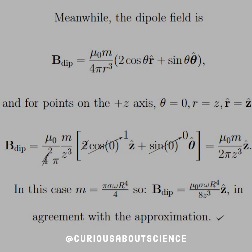All right. But we know that the magnetic field of the dipole is mu naught m over 4 pi r cubed, 2 cosine theta r hat plus sine theta theta hat. We know for points on the axis that theta equals 0, r equals z and r hat equals z hat.